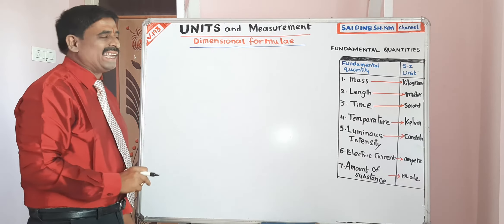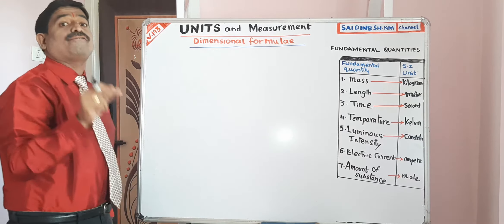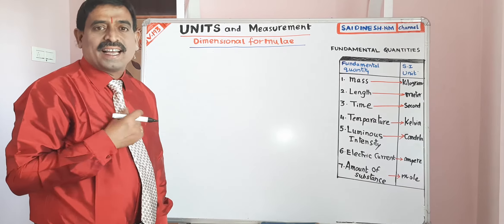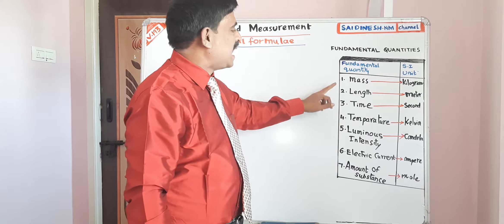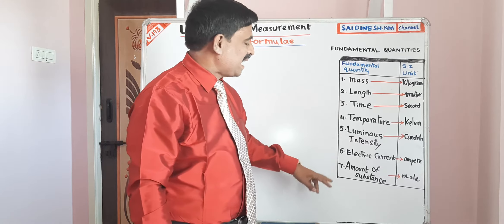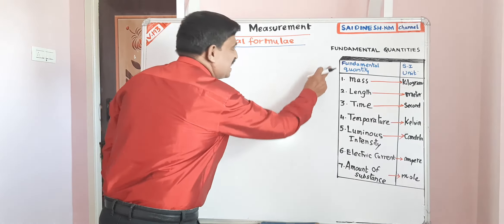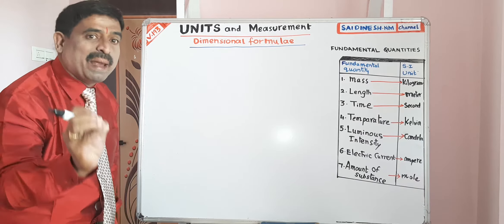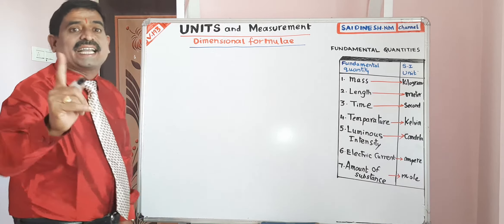I am explaining the dimensional formula of different physical quantities. There are seven fundamental quantities: mass, length, time, temperature, luminous intensity, electric current, and amount of substance. By using these fundamental quantities, we are writing the dimensional formula of different physical quantities.